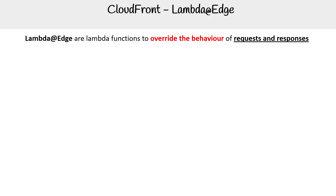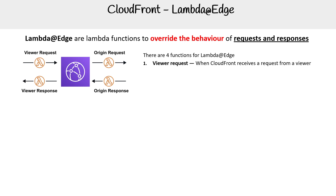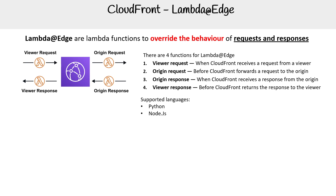Lambda Edge are Lambda functions to override the behavior of requests and responses for CloudFront. Here is a diagram of what that looks like. We have four possible functions we can override via Lambda Edge: the viewer request when CloudFront receives a request from the viewer, origin request before CloudFront forwards a request to the origin, origin response when CloudFront receives a response from the origin, and viewer response before CloudFront returns the response to the viewer. Supported languages are Python and Node.js, and functions are deployed at the regional edge caches.